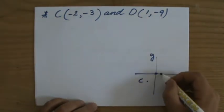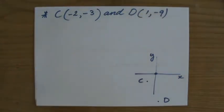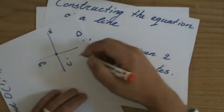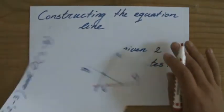D is (1, -9), that's all the way over there. So I'm looking for the equation that goes through these two points, C and D.